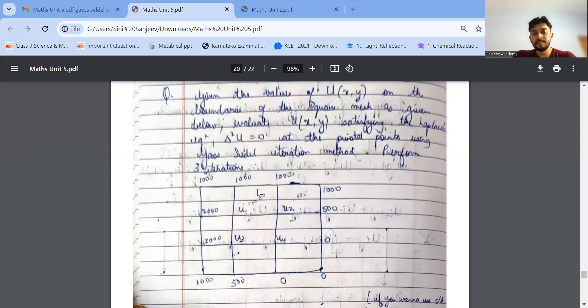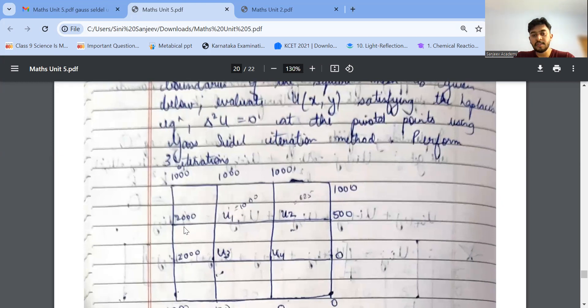As you can see this is the question, the table. When we see the Gauss-Seidel iteration method, the table will be given. So this boundary we can see right, 1000, 1000, 1000, 2000. This U1, U2, U3 and U4 values won't be given in the question.